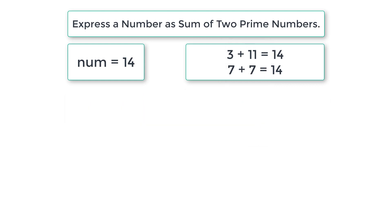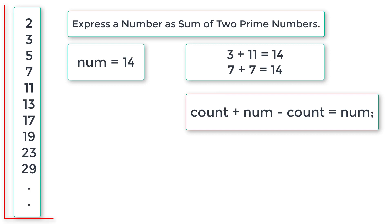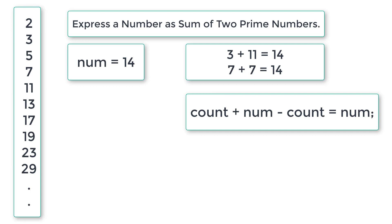We have a formula here which you need to remember: count + (num - count) = num, since the count terms cancel, leaving num. We already know the num entered by the user. The count value iterates over prime numbers from 2 to n, and we will be generating those prime numbers in one of our functions.